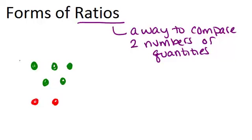Over here notice that we have five green dots and two red dots. A ratio could help us to represent the number of green dots compared with the number of red dots.